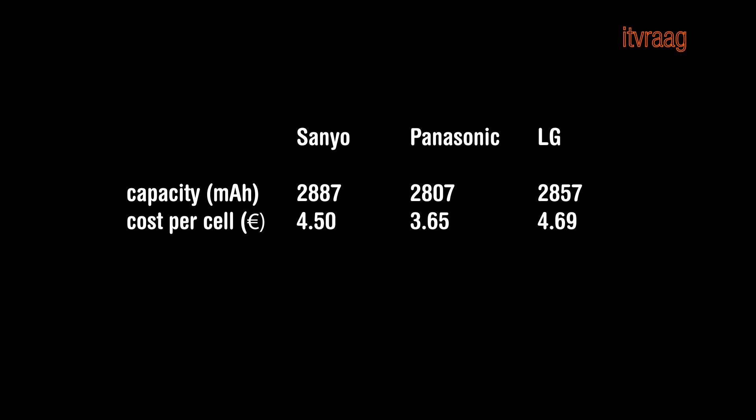I would say that the Panasonic is the winner when looked at the price versus capacity. However, the maximum current on the Panasonic is at 6.7 amps while the other two are at 10 amps. That is something to keep in mind if you want to draw more current.